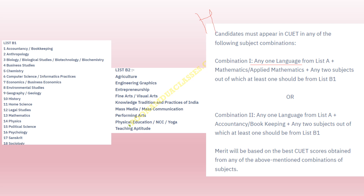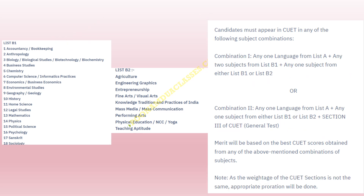Let us see the combinations once more. For BCom Honors — Combination 1: any language from List A, mathematics is compulsory for honors, plus any two subjects of which at least one should be from List B1. Or, any language plus accountancy/bookkeeping plus any two subjects of which at least one should be from List B1. For BCom Program: any one language from List A, plus any two subjects from List B1, plus any subject from List B1 or B2. I always suggest you should appear for Section 3 if possible, according to the course you want to go for.